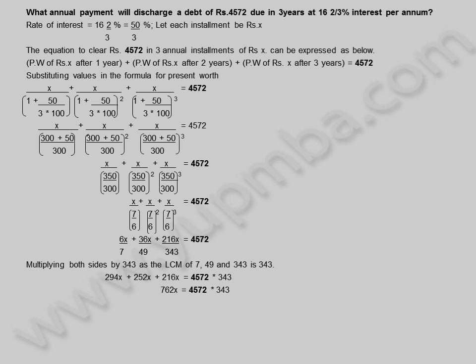Simplifying, we get the total expression equal to 4572. Solving: X is equal to 4572 into 343 divided by 760, which implies X is equal to 2058 rupees.